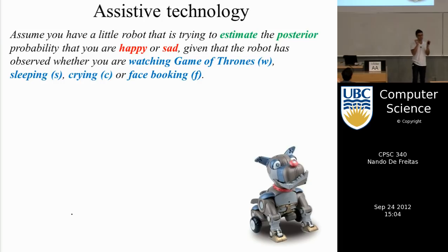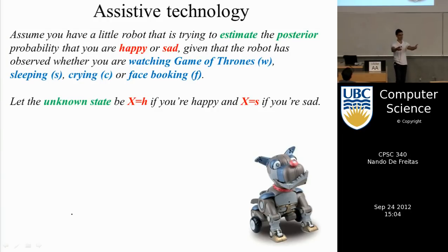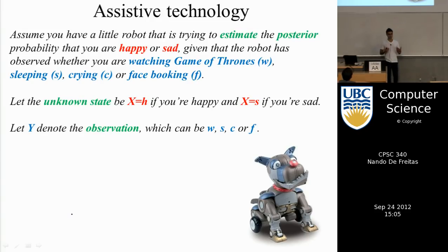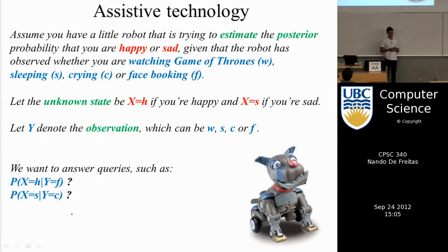The observation is not binary, but takes four possible values. The unknown variable is often known as the state — I'm trying to estimate the state inside your head, whether you're happy or sad. My observations are W for watching, S for sleeping, C for crying, and F for Facebook. The task is to estimate probabilities like: what's the probability that you're happy given that you're watching Facebook? Or what's the probability that you're sad given that you're crying? The robot is trying to determine whether you're sad or happy probabilistically.